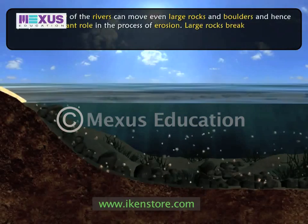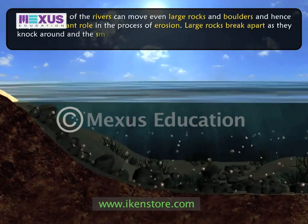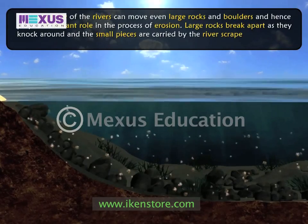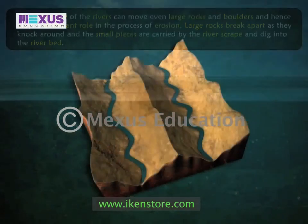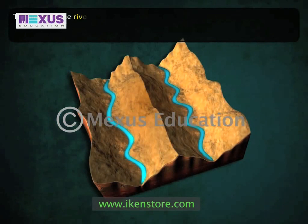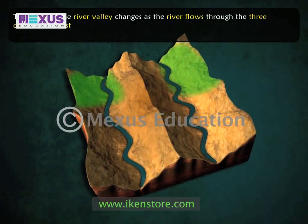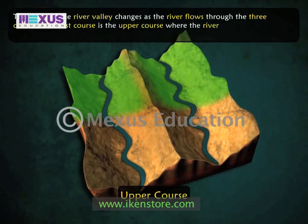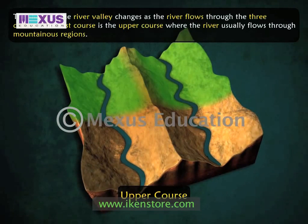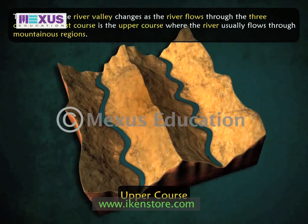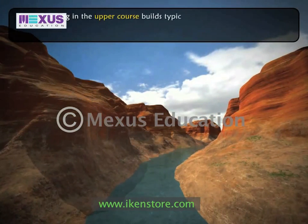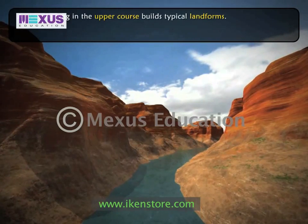Large rocks break apart as they knock around, and the small pieces carried by the river scrape and dig into the river bed. The shape of the river valley changes as the river flows through three courses. The first course is the upper course, where the river usually flows through mountainous regions. Here the volume of water is not much, but it flows swiftly because of the steep gradients. The river in the upper course builds typical landforms.